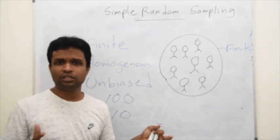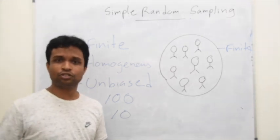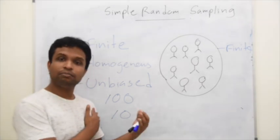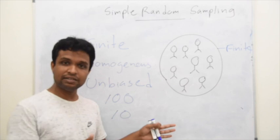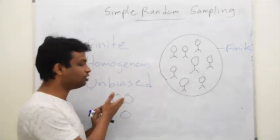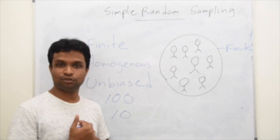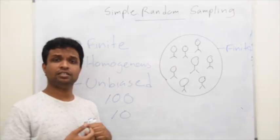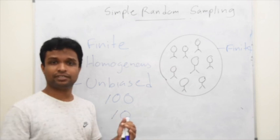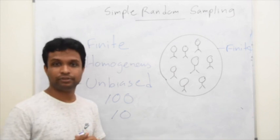Nowadays, we don't have to waste time for those lottery methods. We can use computer software and we can use random number generators and we ask the computer to generate 10 random numbers within the interval of 100. So we can take those 10 individuals to the group. Or else in old days, we had random number tables. From those tables also, we can take simple random samples.